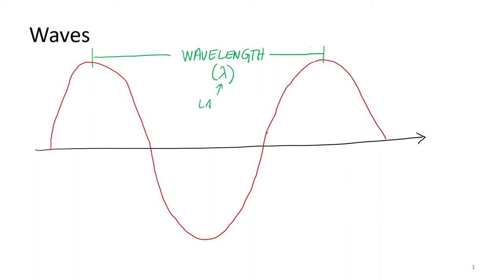I drew it from the two crests or maxima of the waves, but it can be from any two points: trough to trough, leading edge to leading edge, back edge to back edge. If this were a regular wave drawn better, the wavelength would be the same distance no matter where you measured it.